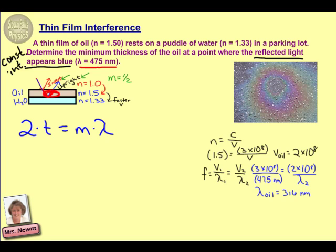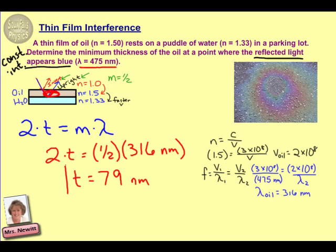Now we have determined both our m value and our wavelength in the film or in the oil. And so we are finally now ready to go back and look at our equation. 2t, t being our unknown, is equal to one-half times the wavelength of 316 nanometers. And if we solve for t, we find a value of 79 nanometers as the thickness of the film.